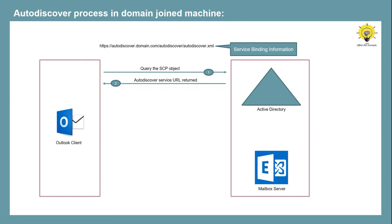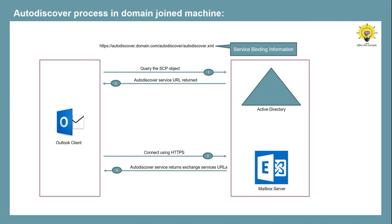Then Outlook client will connect to the mailbox server using an HTTPS connection and the Outlook profile will be configured. If the Autodiscover service URL is configured for your Exchange Server, the Autodiscover query will resolve at this step and the Outlook profile will be configured successfully. But if the Autodiscover URL is not configured, the Autodiscover query will be redirected to the SRV record, and the Autodiscover service will look for an SRV record in your Active Directory.